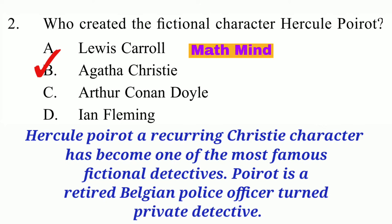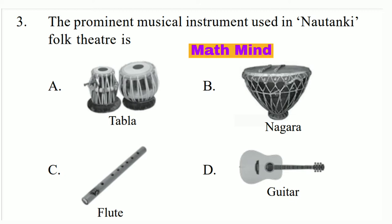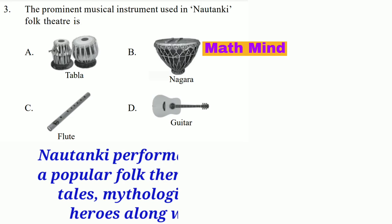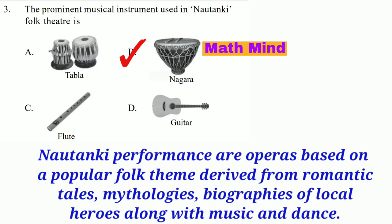Poirot is a retired Belgian police officer turned private detective. Question No. 3. The prominent musical instrument used in Nautanki folk theatre is blank. Option B is correct: Nagara. Nautanki performances are operas based on popular folk themes derived from romantic tales, mythologies, and biographies of local heroes, including music and dance. Nagara is the musical instrument very popular in Nautanki folk theatre.